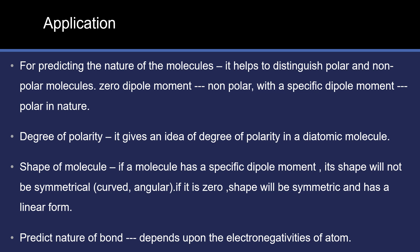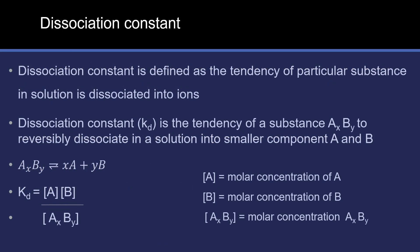Then you can predict the nature of the bond — how electronegative it is. If you have a dipole moment, you can predict the bond character. This next property is called the dissociation constant.